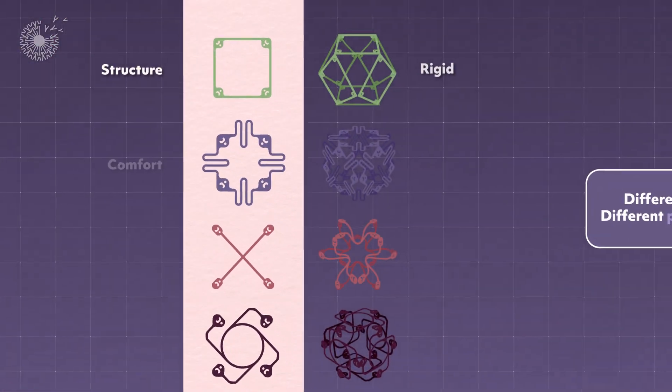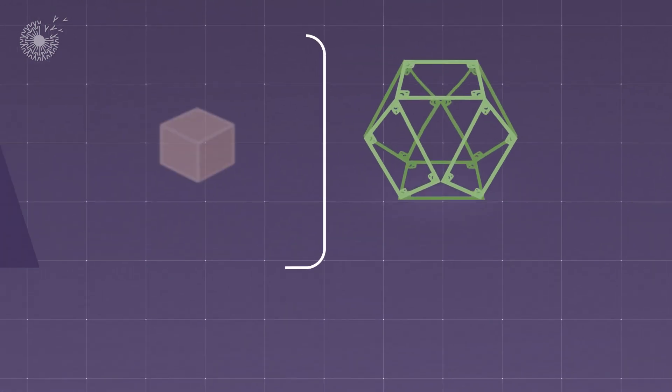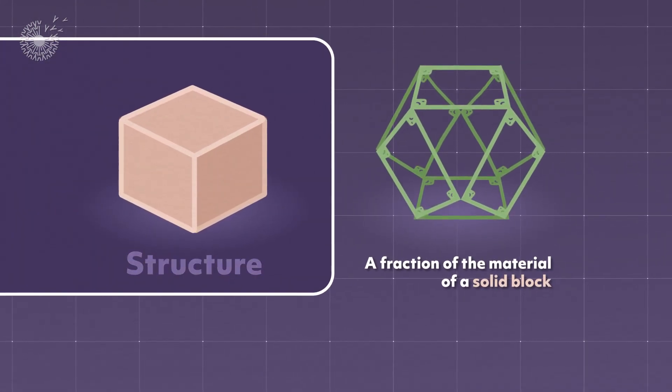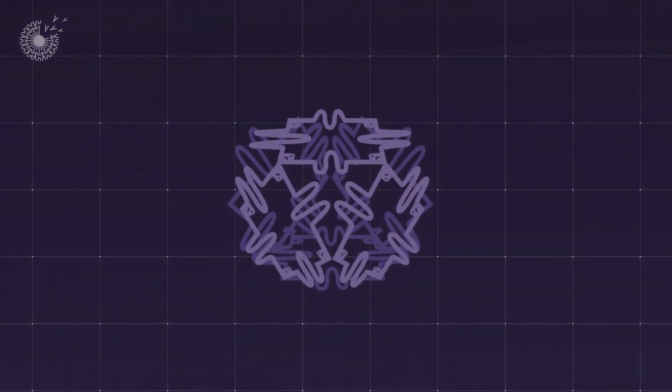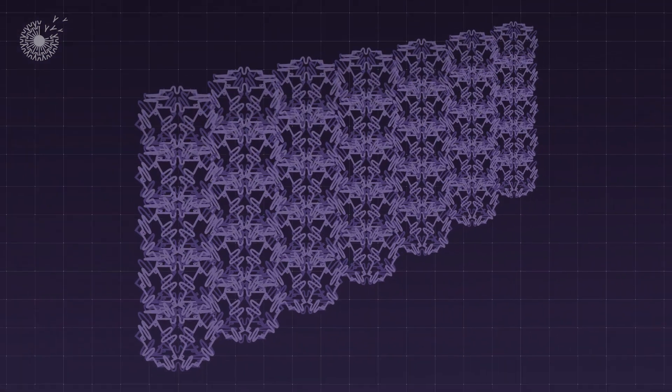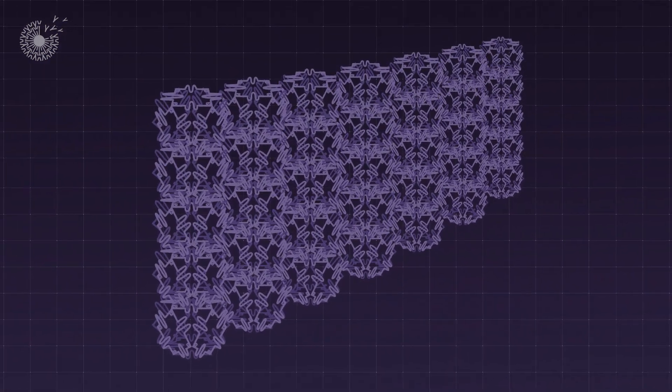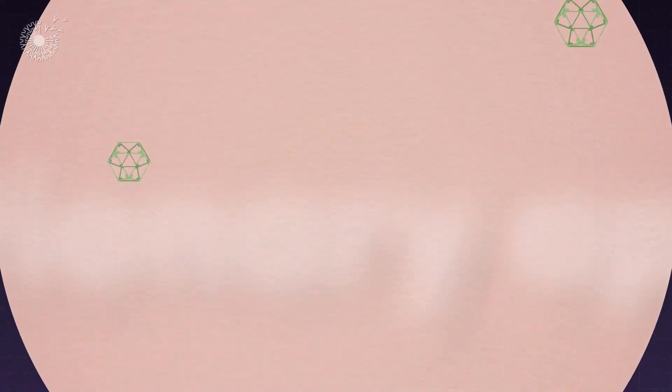Different initial shapes impart different properties on the metamaterial. Simple, open squares give strength and structure. Add an accordion bend on each side, and that slight amount of give is multiplied many times over to create a squishy material made out of much more rigid matter.